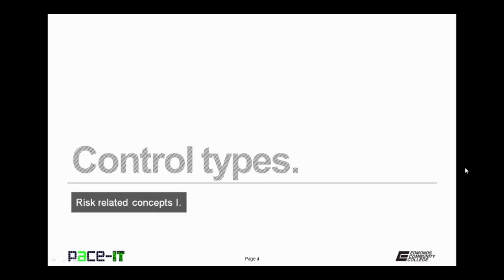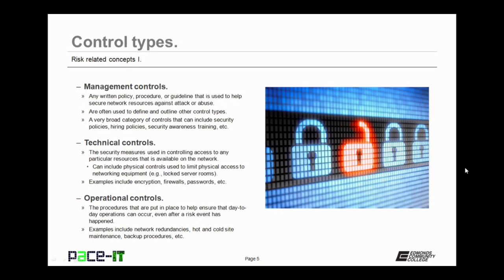I'm going to begin by talking about control types. There are three different types of controls that can be put on network resources. The first one is management controls. These are any written policy, procedure, or guideline that is used to help secure network resources against attack or abuse.